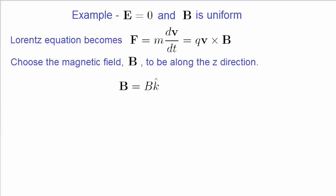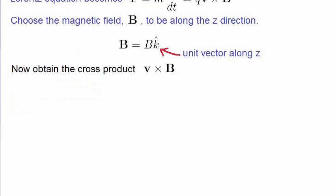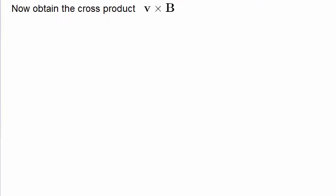So we can rotate our axes such that the magnetic field is along the z direction. We can rewrite the magnetic field vector as a simplified vector of B along a unit vector k, which is along the z direction. Now all that remains is to obtain the cross product v cross B and substitute it into the Lorentz equation. We choose a general direction for the velocity vector with components vx, vy, and vz, indicated by the unit vectors i, j, and k.